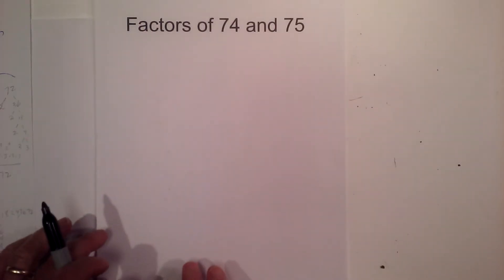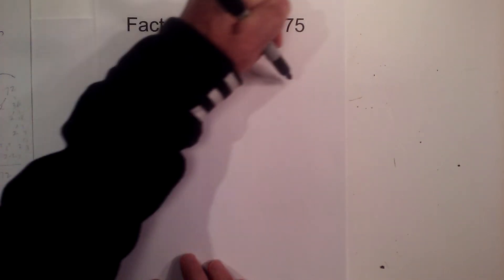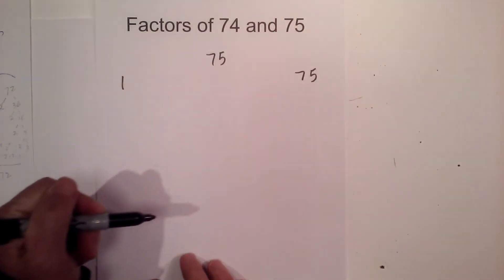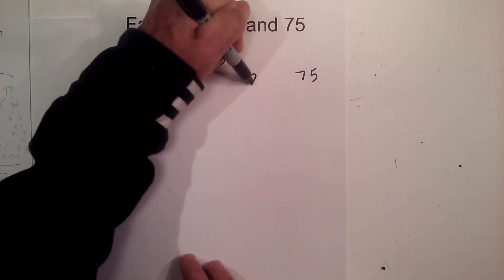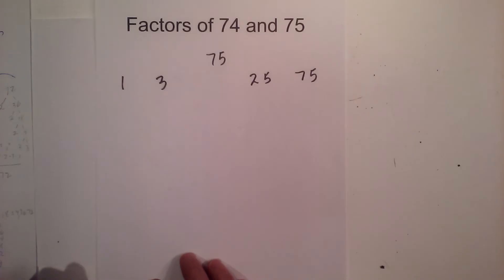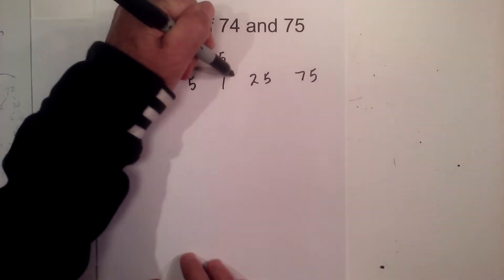Now let's look at 75. 1 times 75 equals 75. 2 does not go into 75. 3 goes into 75 25 times. 5 goes into 75 15 times.